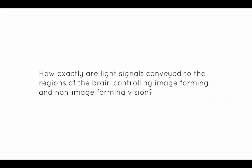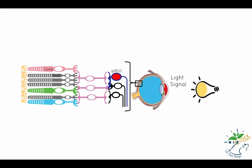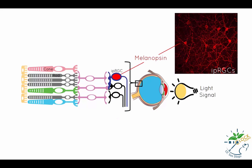How exactly are light signals conveyed to the regions of the brain controlling image-forming and non-image-forming vision? Rods, cones, and IPRGCs are sensitive to different wavelengths of light. After light signals are received by rods and cones, the signals are relayed to retinal ganglion cells, including IPRGCs, through the intermediate layer, and then to the inner brain. At the same time, IPRGCs alone are able to directly receive light signals by melanopsin.